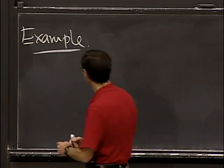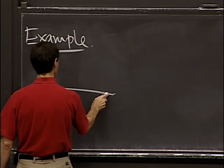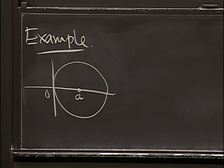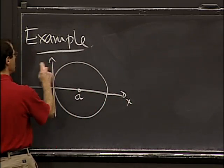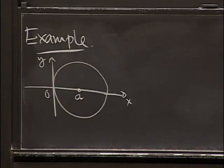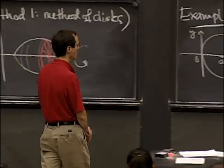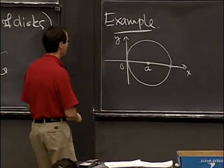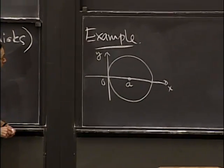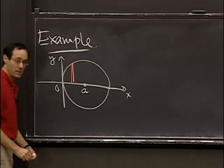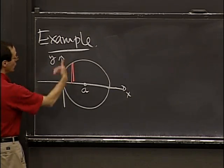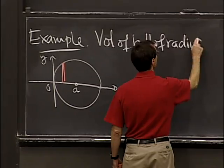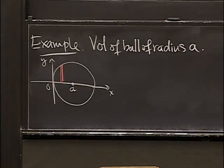Let's deal with an example. We'll switch from a football to a soccer ball. I'm going to take a circle of radius a. This is 0 and this is a — I'm putting it in this particular spot to make a certain exercise on your homework easier. I'm doing half of it for you right now. The formula has to do with keeping track of these slices and sweeping things around. The full region we're talking about is the volume of the ball of radius a — that's our goal.